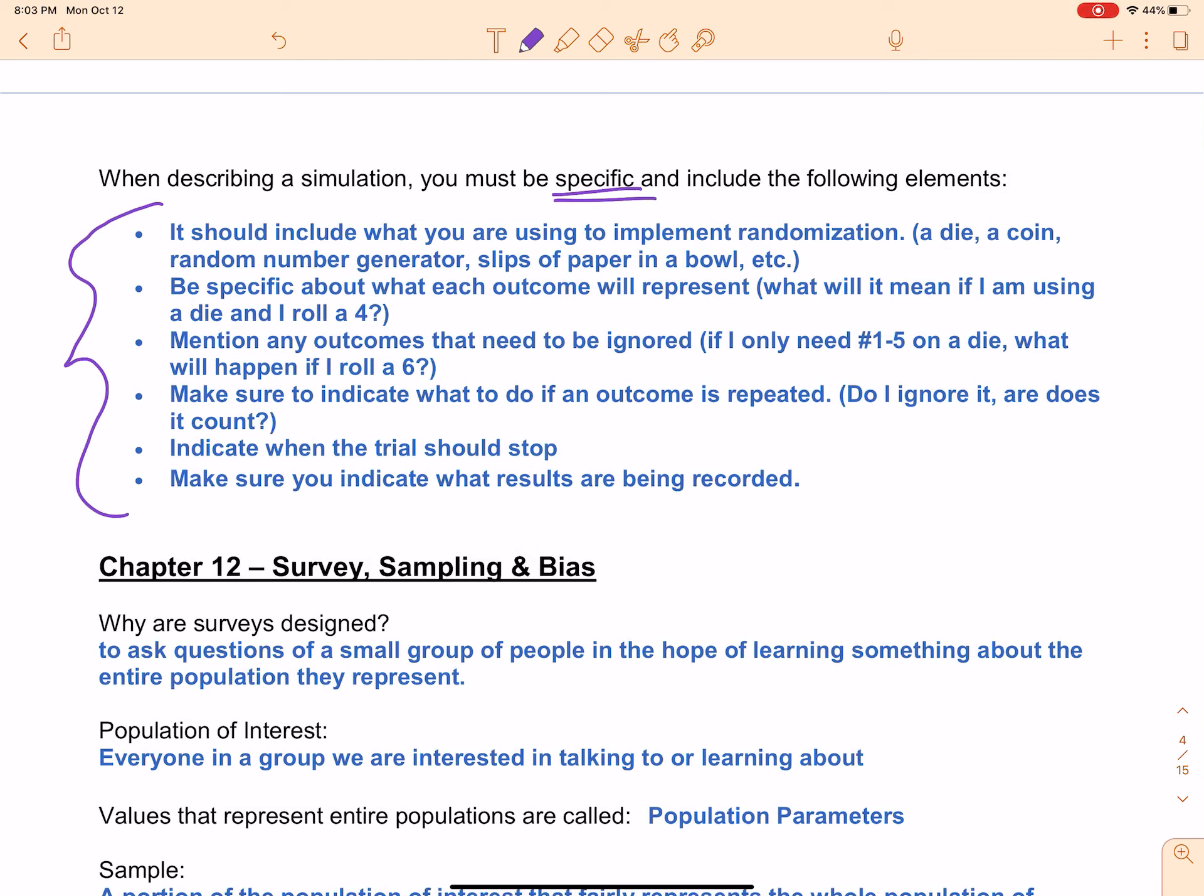The first thing you always need to do is explain what you're including to implement your randomization. Are you using a die? A coin? A random number generator? Slips of paper in a bowl? What are you using to simulate your randomness?